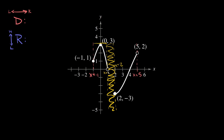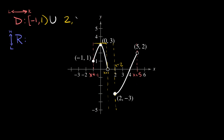We have a gap from positive 1 to positive 2 that we need to account for. The first section goes from negative 1 to positive 1 — there's a closed circle at negative 1 so we use a bracket, and an open circle at positive 1 so we use a parenthesis. To account for the gap, we use a union symbol, then write the domain of the second section: from positive 2 to positive 5. Closed circle at positive 2 means bracket, open circle at positive 5 means parenthesis.